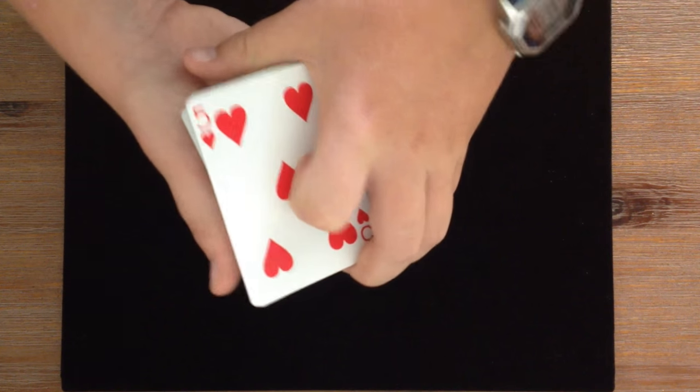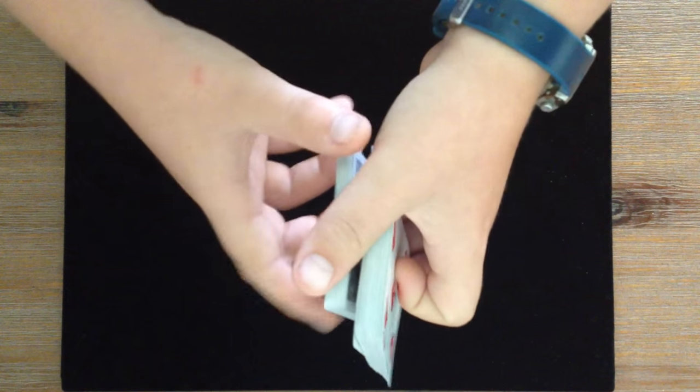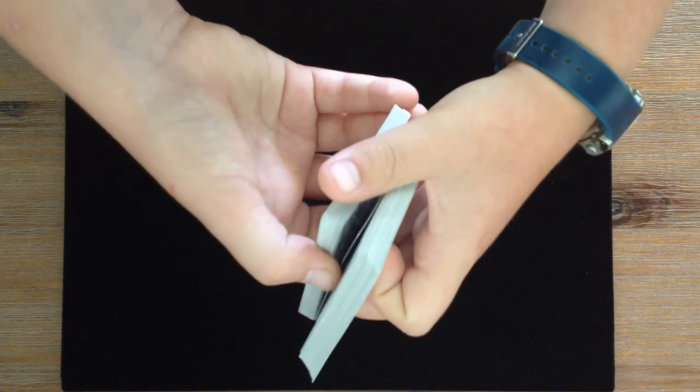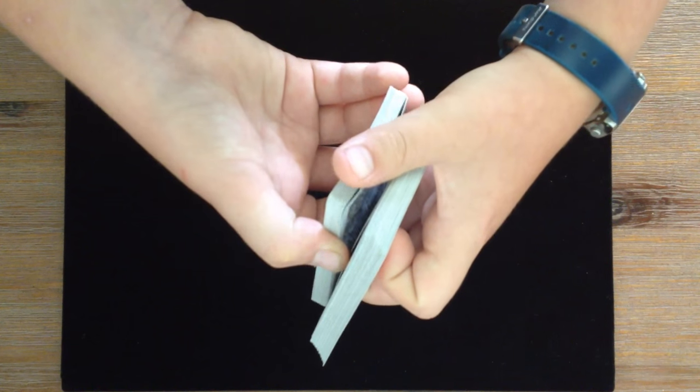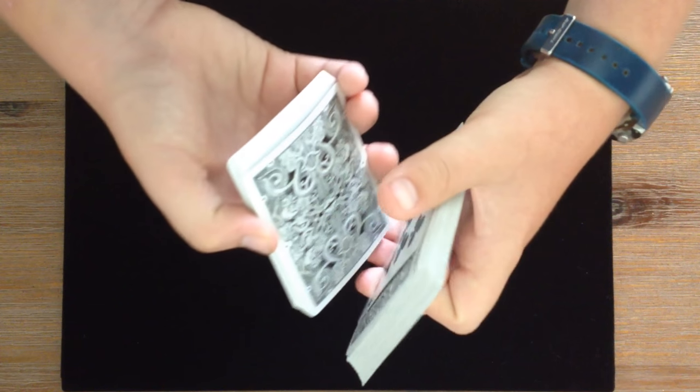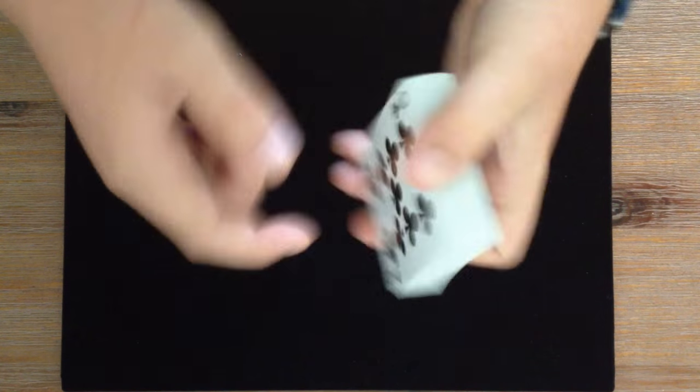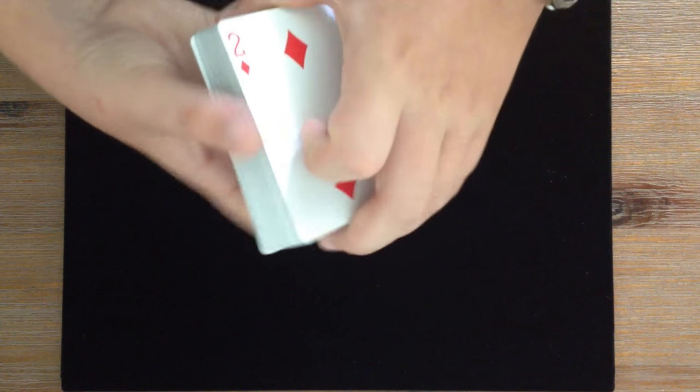So you take off half the cards, place them on the top, but you turn them over. Okay, so you turn them over, push them in. And now what you want to do is take these cards from the break. This is a pretty hard move to learn, but you will learn it. Take those cards off of the break, place them on top.